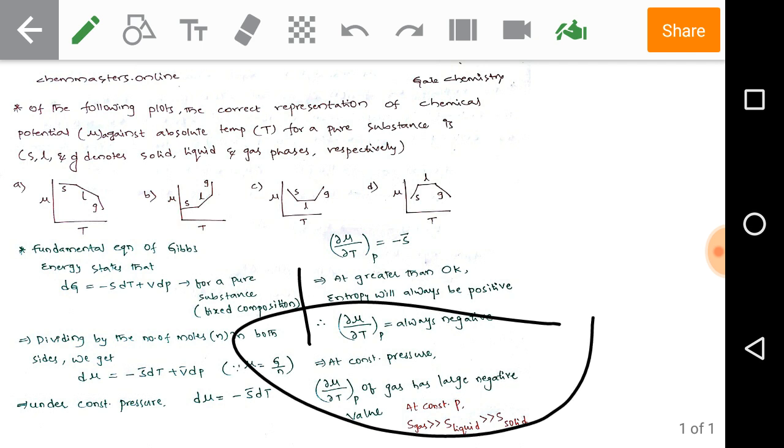So for this information we have the plot, we can check the plot here option A where the mu value should be very less for gases for that and when we compare with liquid and when we compare with solid, hence the plot A indicates the given information.